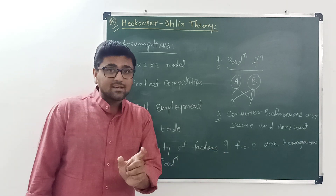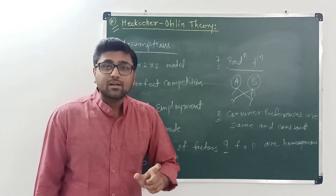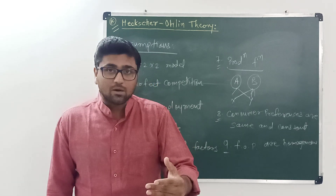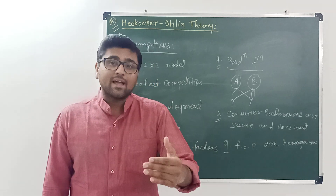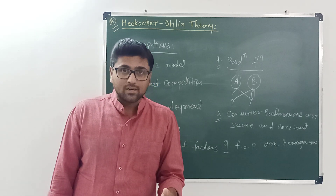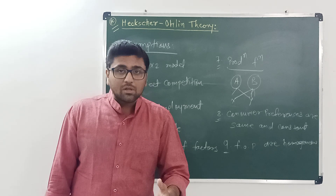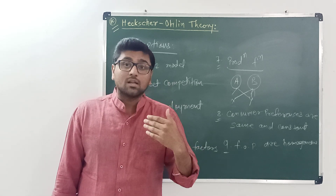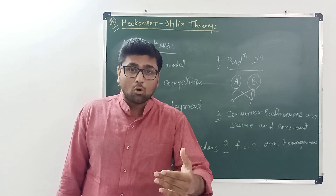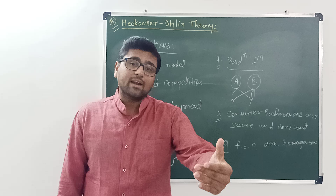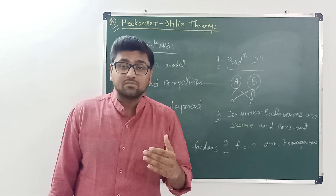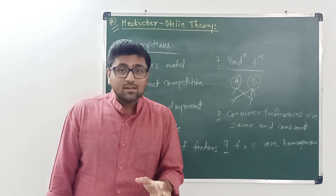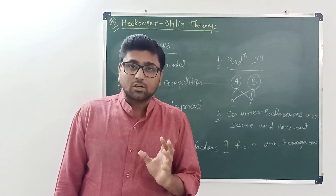The Heckscher-Ohlin theory is based on these nine assumptions. In summary, the theory states that a capital-abundant nation exports capital-intensive commodities and imports labor-intensive commodities, and a labor-abundant nation exports labor-intensive commodities and imports capital-intensive commodities. The full explanation of the theory is covered in part 2.